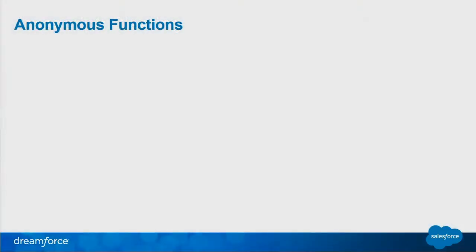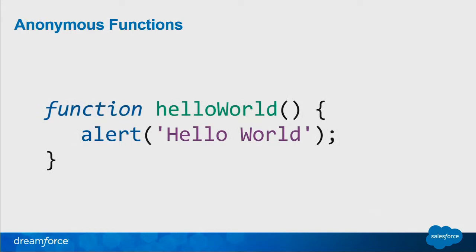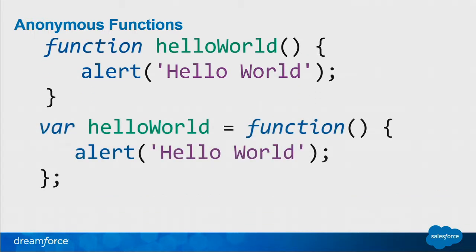I want to get through these four or five areas that I've listed and how I got through them. First is anonymous functions. Here we have a function declaration — here we have 'hello world,' it's declared, it's named. And when it's called, it will do a JavaScript alert of 'hello world.' Another way to put it is to assign the variable hello world to the function — that is a function expression.